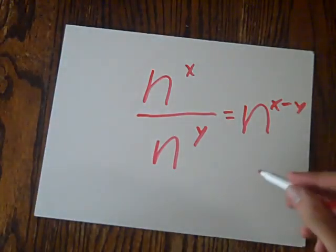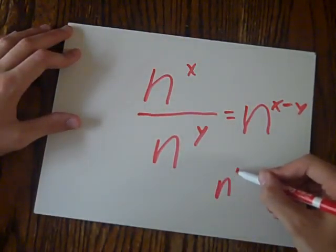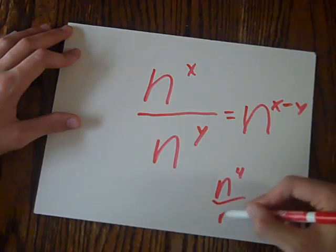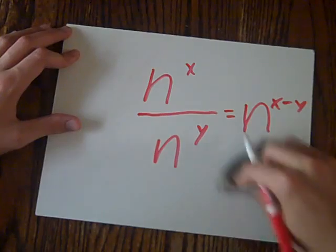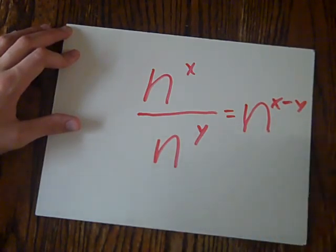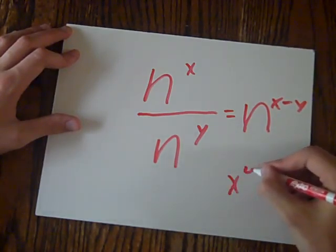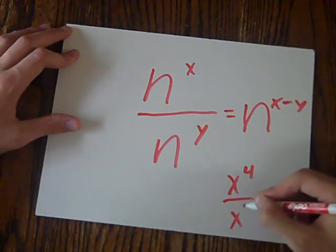Let's do an example of this. We have n to the power of 4 over n to the power of 3. Or, let's make these x's, since n can represent any variable. x to the power of 4 over x to the power of 3.